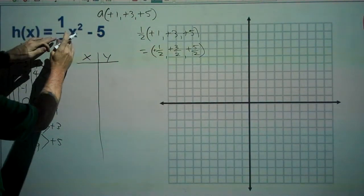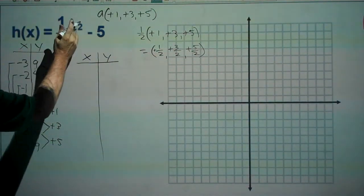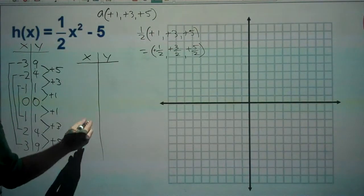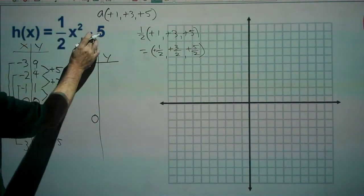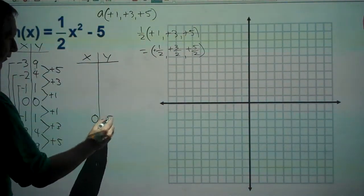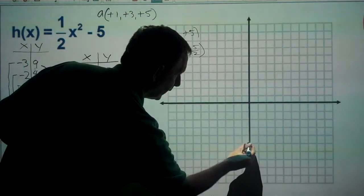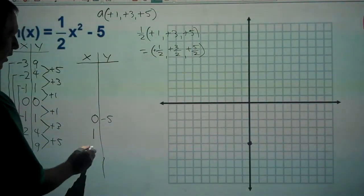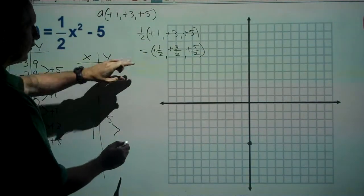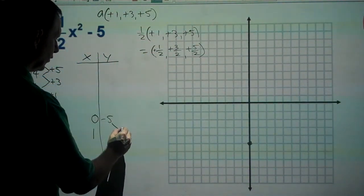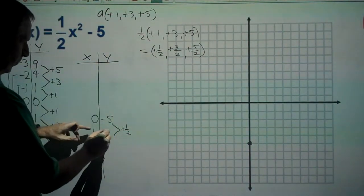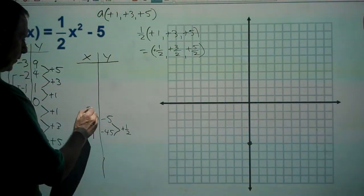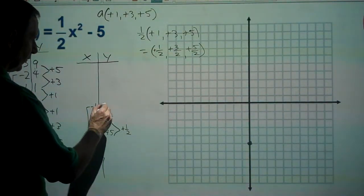This function is symmetrical about the y-axis. For an input of zero, the output is zero squared minus five, which is negative five — that's our vertex. For an input of one, we add one half to negative five, getting negative 4.5. On the other side, an input of negative one also gives negative 4.5.